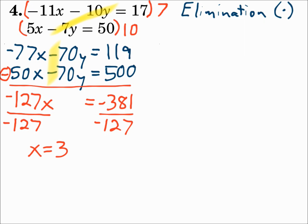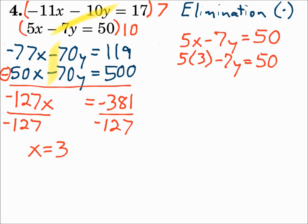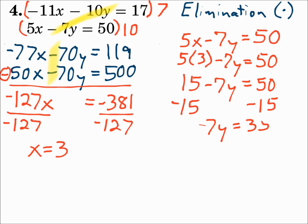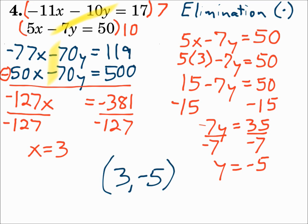Now substitute 3 in for x in the second original equation. 5 times 3 is 15. Subtract 15 from each side, then divide both sides by negative 7, and y is negative 5. Write your answer as an ordered pair: (3, negative 5). We don't do these with graphing. None of the variables had a coefficient of 1, so we can't substitute. So eliminate — and since none of the coefficients matched, we use elimination with multiplication.